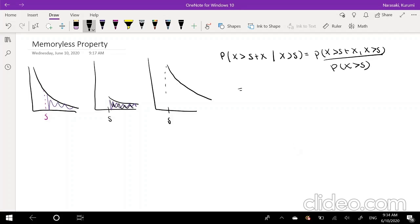Okay, well, the numerator, we're saying probability that X is greater than S plus X, and it's greater than S. So that's kind of like redundant because we're basically saying the same thing twice. So we can actually simplify the numerator down to X is greater than S plus X divided by the probability that X is greater than S.